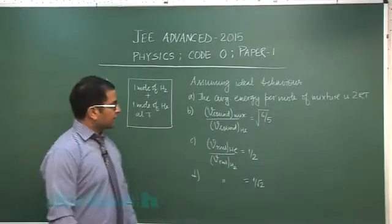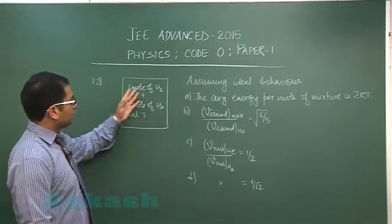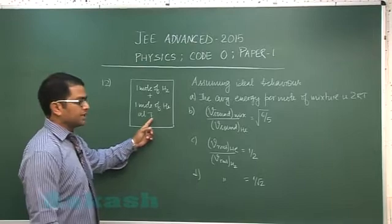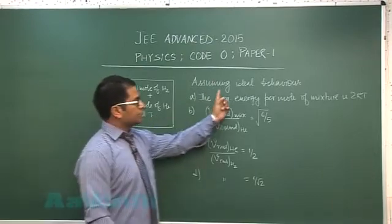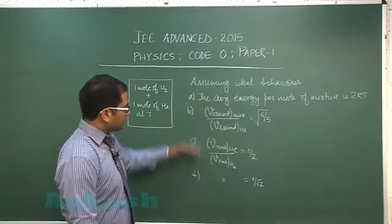Question number 12 from kinetic theory of gases: a closed container having one mole of hydrogen and one mole of helium at temperature T. We need to assume ideal behavior under this situation. These are the four different things which are asked.